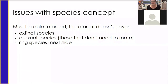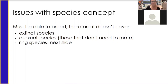Last class, you learned that the definition of a species is animals that can interbreed and form fertile offspring. The issue with this is you must be able to breed two animals to even know if they're the same species. This is a definition that predated DNA testing.